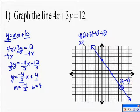Well, it does. 24 plus negative 12 does equal 12. So that shows you that that is the graph of that line 4x plus 3y equals 12.